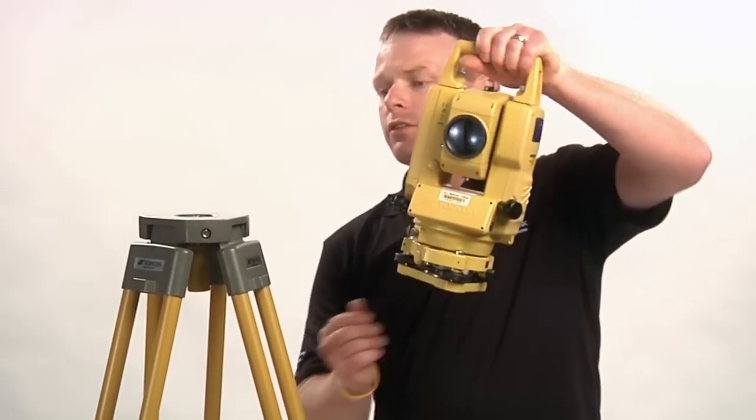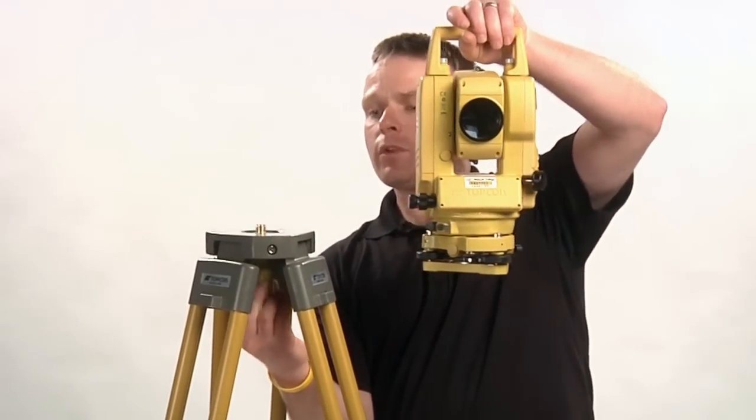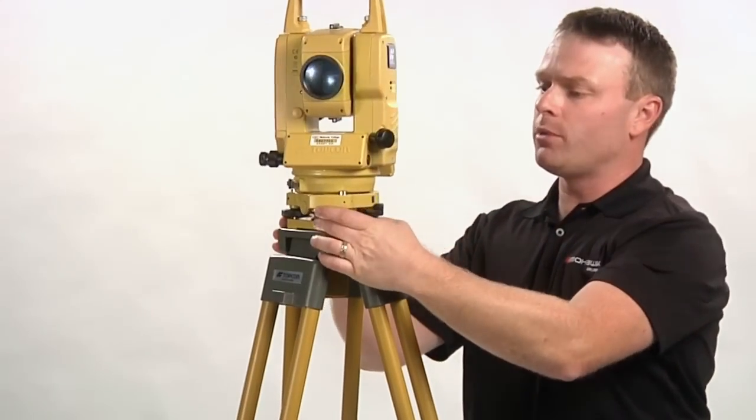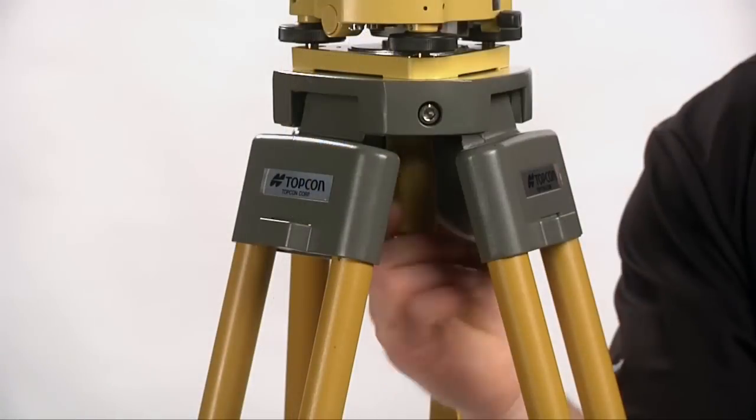After taking the total station out of its case, mount the total station with the tripod screw and center the machine on the tripod head before securing with the screw.